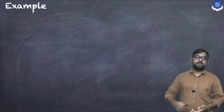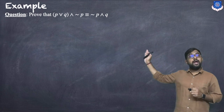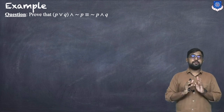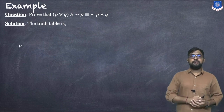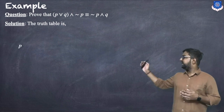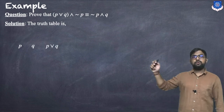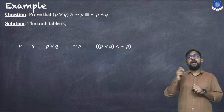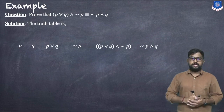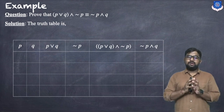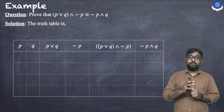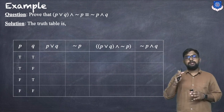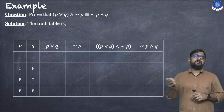Let us discuss an example: prove that (p∨q)∧¬p is logically equivalent to ¬p∧¬q. We create a truth table with columns for p, q, p∨q, ¬p, (p∨q)∧¬p, and ¬p∧¬q. With two statements we have four possibilities: TT, TF, FT, FF.